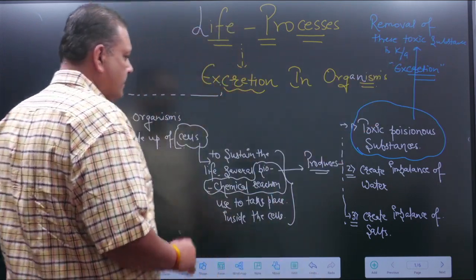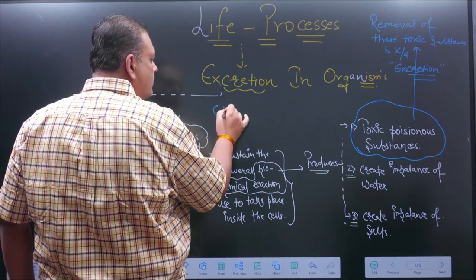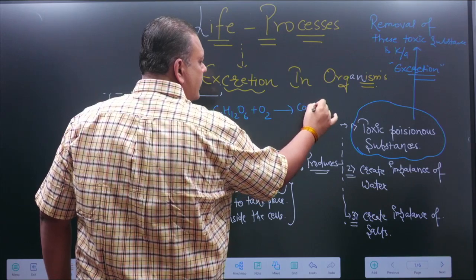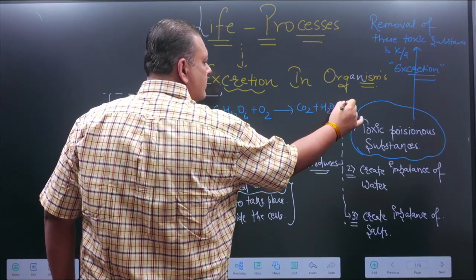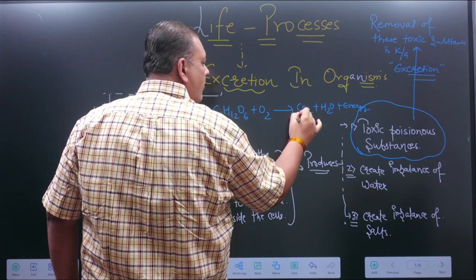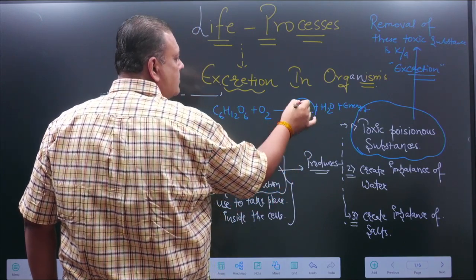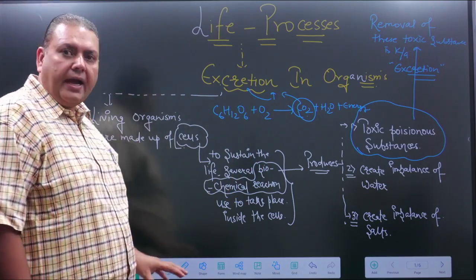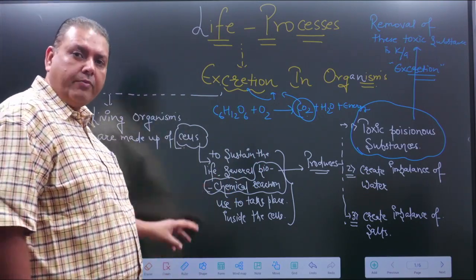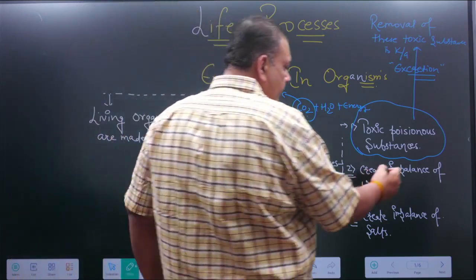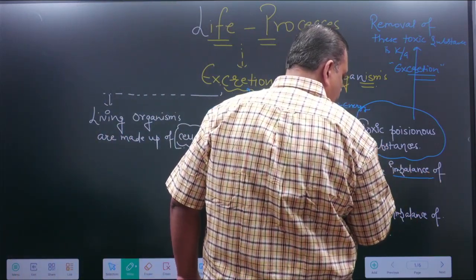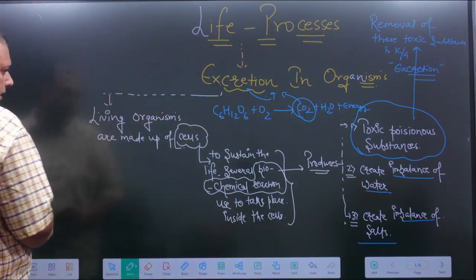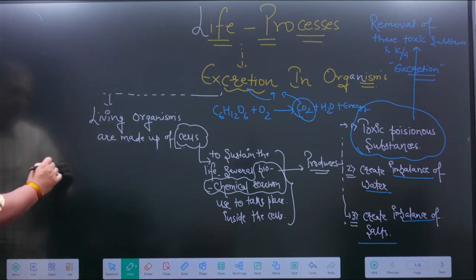The best example is that even during the oxidation of food, carbon dioxide is formed, and removal of this carbon dioxide from our body is also termed as excretion. At the same time, during these chemical reactions inside the cells, there will be an imbalance of water and salt.